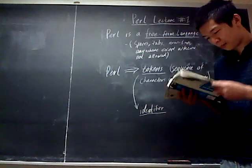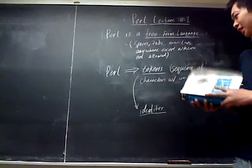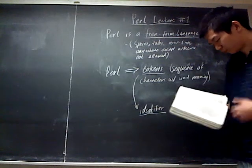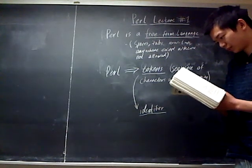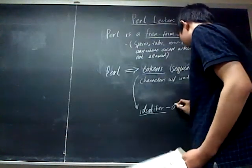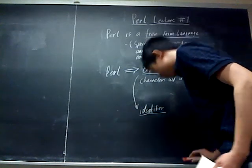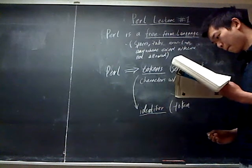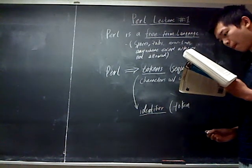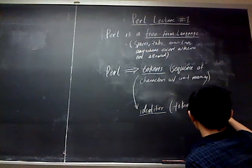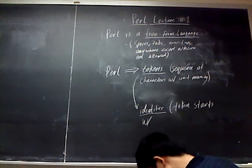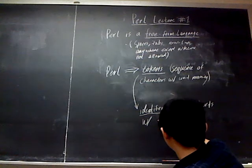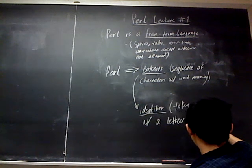So let me put down the definition of the identifier. An identifier is a token that starts with a letter or underscore and contains only letters, digits, and underscores.